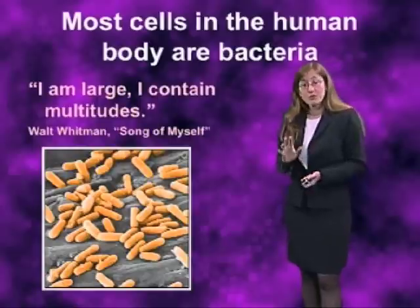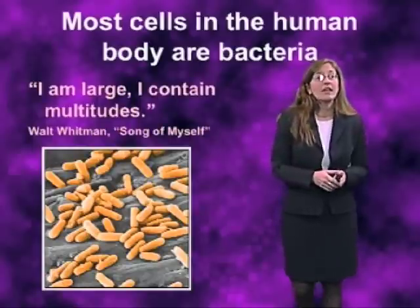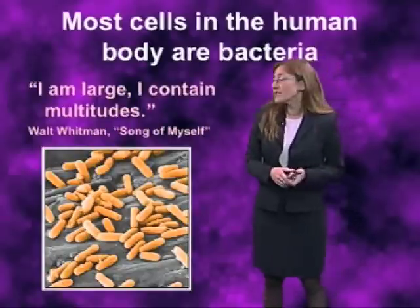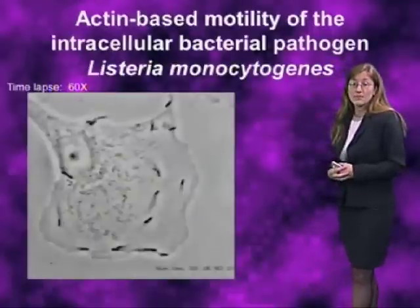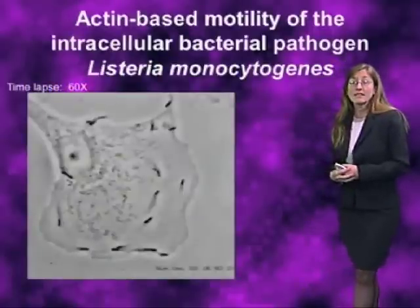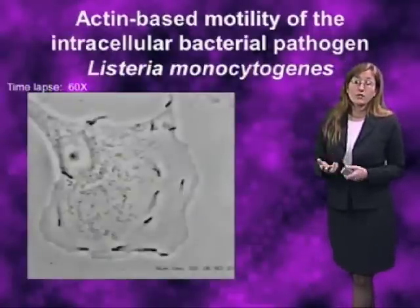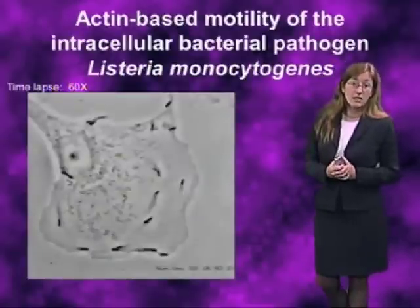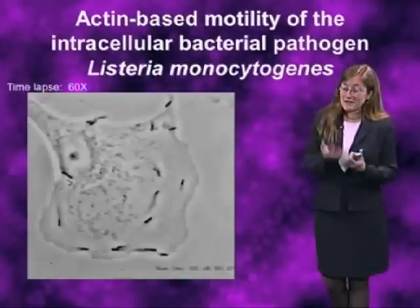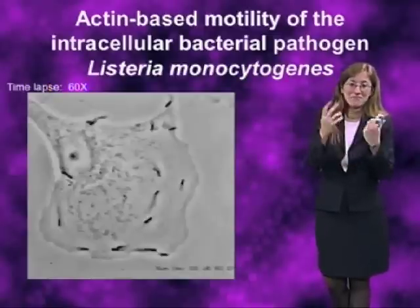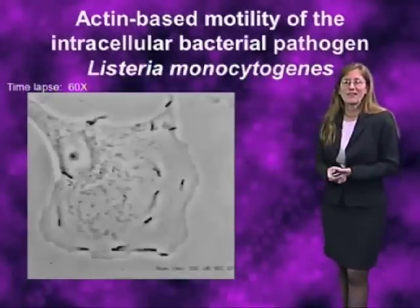The particular example I'm going to talk about is actin-based motility by an organism called Listeria monocytogenes. This is a gram-positive organism closely related to Bacillus subtilis, found ubiquitously in the soil, and every time you eat lettuce that hasn't been properly washed, you eat some of this organism.